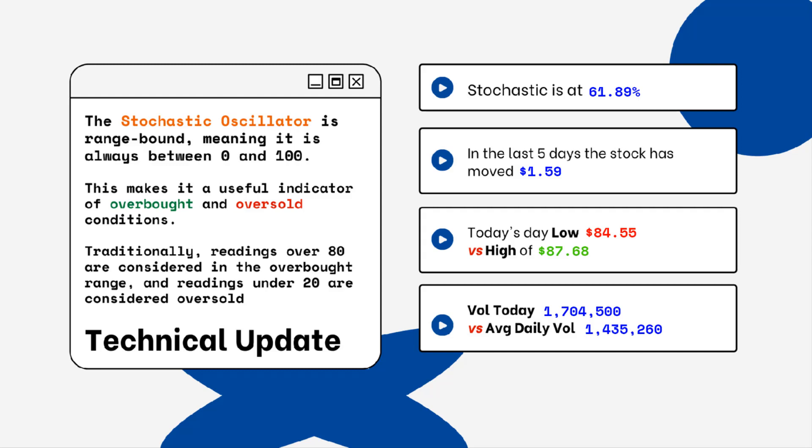Readings below 20% are considered oversold — you want to be aware of this when looking at a particular stock. We've also provided today's volume of shares traded and the average daily volume, so you can see how much volume is being traded and whether it is above or below the average daily volume level. This tells you how relevant the move is from the stock today.